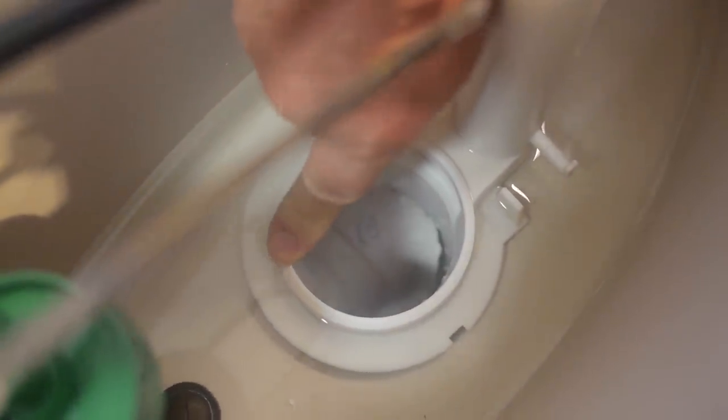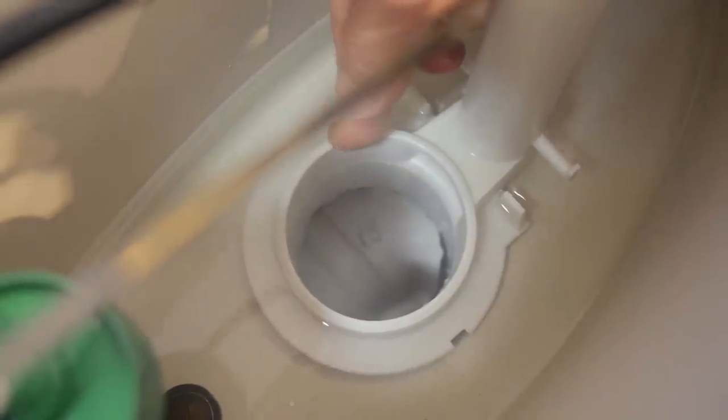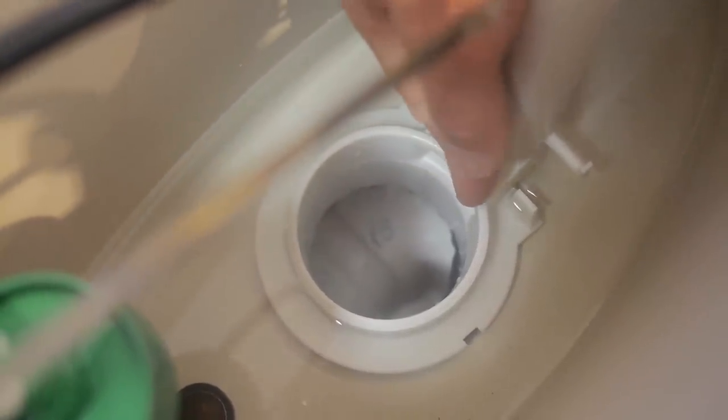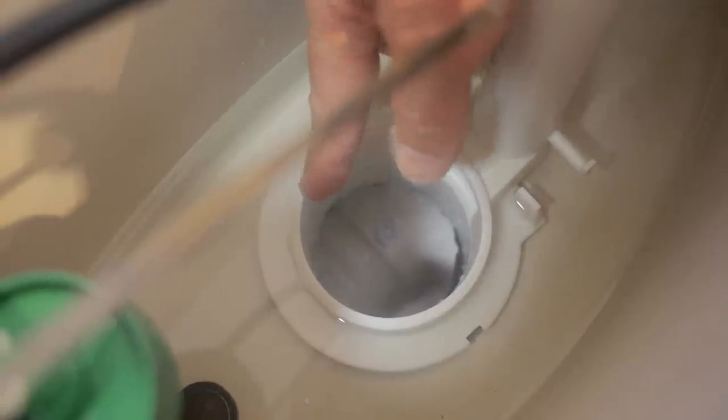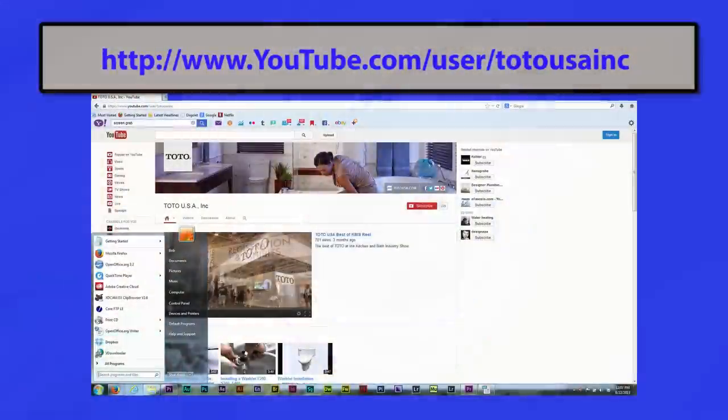Sixth, run your finger over the flapper seat of the flush valve to check for nicks or roughness on the surface. If you feel any irregularity, you may need to replace the valve. Check our video on replacing the flush valve to see how we do it.